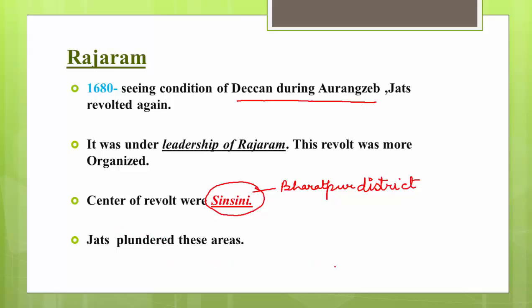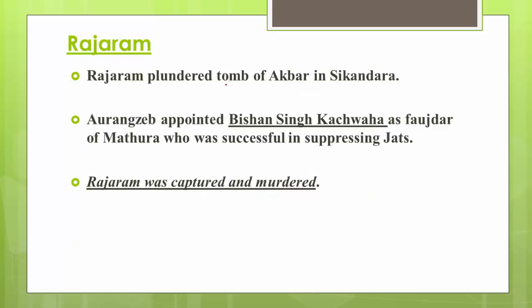The tactics Jats used were to plunder these areas — rich and poor, even jagirdars, all castes, Hindus and Muslims. Raja Ram also plundered the tomb of Akbar at Sikandra near Agra. Aurangzeb then appointed Bhishan Singh Kachwaha as the Faujdar of Mathura, who was able to suppress the Jats. Raja Ram was captured and murdered after this suppression.